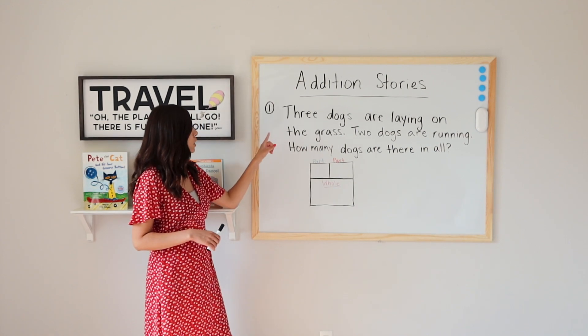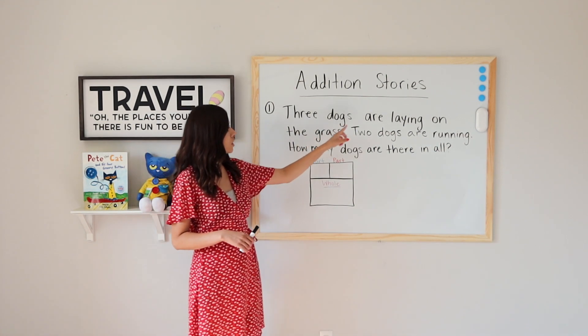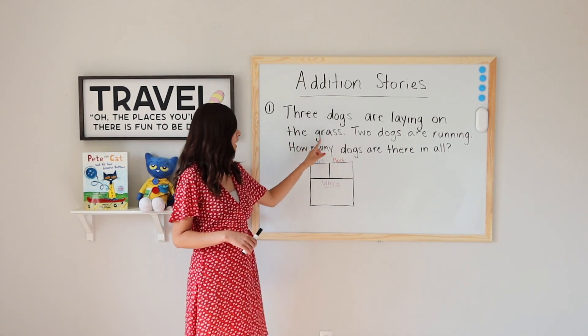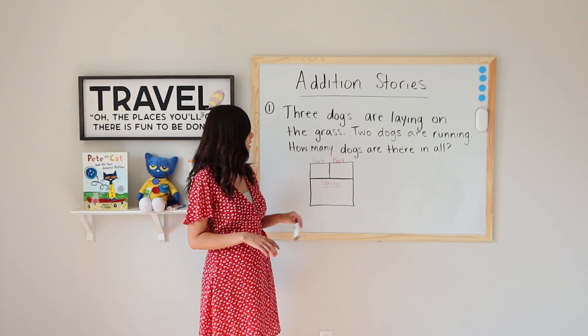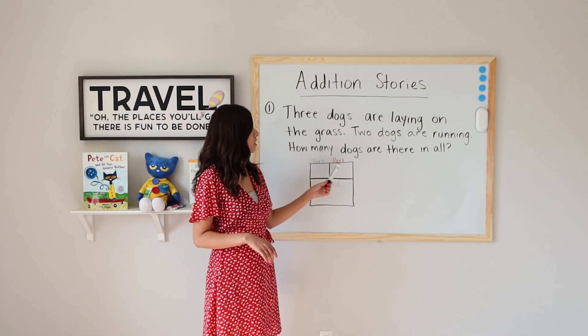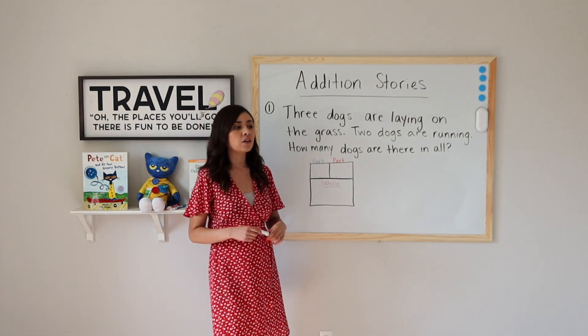Number one: three dogs are laying on the grass, two dogs are running. How many dogs are there in all?